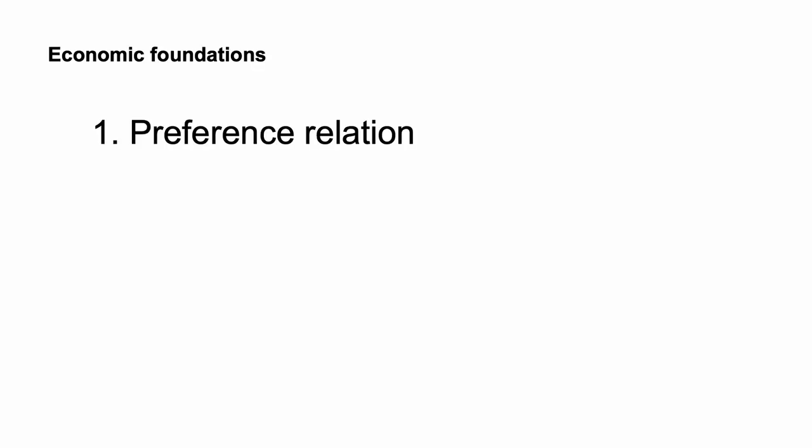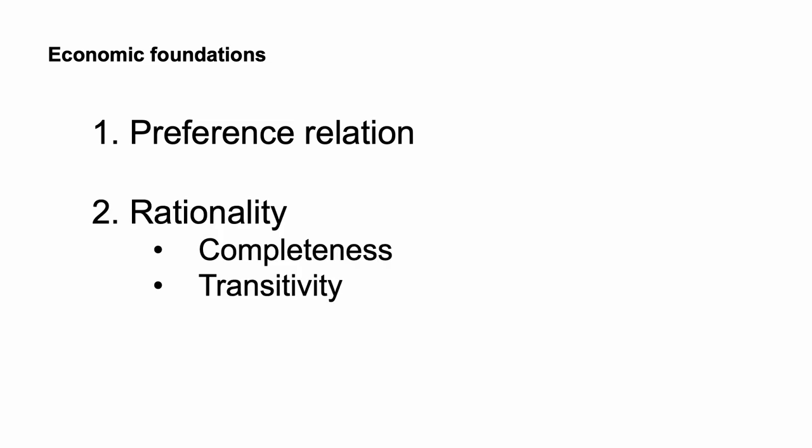I will first examine the preference relation used by economists. Then I will discuss how economists define rationality and the foundational axioms of rationality, completeness and transitivity. Finally, I will describe how the preference relation and axioms form the basis of utility functions.